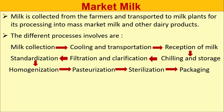Market milk is collected from the farmers and transported to a milk plant for its processing into mass market milk and other dairy products. The different processes involved are: milk collection, cooling and transportation; reception of milk; chilling and storage; filtration and clarification; standardization; homogenization; pasteurization; sterilization; and packaging.